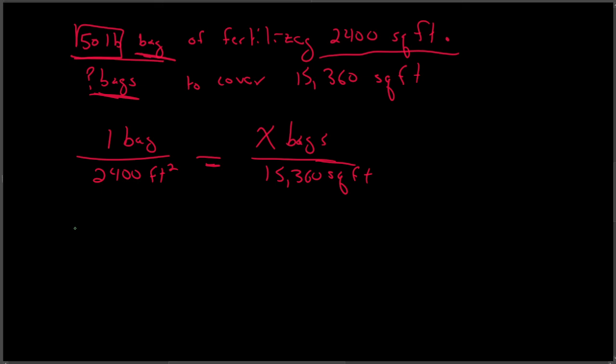And so my unit check helped me there because this 50 pound was extra information because I was looking for bags. So see how we use our words in our units to help check. And now I can cross-multiply. 2,400x is equal to, in this cross-multiplication, 15,360.